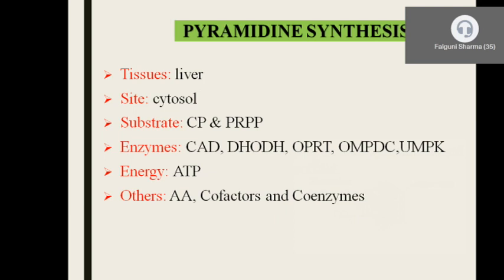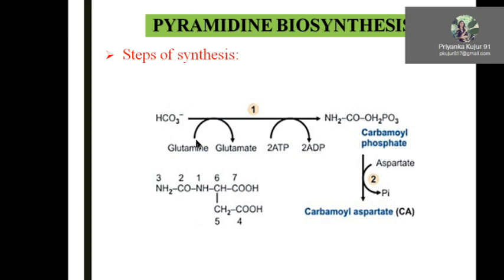Step 1 is very important — it is a key link between the two pathways. Bicarbonate reacts with glutamine; glutamine donates its amino group, forming carbamoyl phosphate. This is an energy-requiring process consuming ATP. The enzyme is carbamoyl phosphate synthetase 2 (CPS2), the first enzyme of pyrimidine biosynthesis. This contributes the third nitrogen (N3) of the pyrimidine ring.